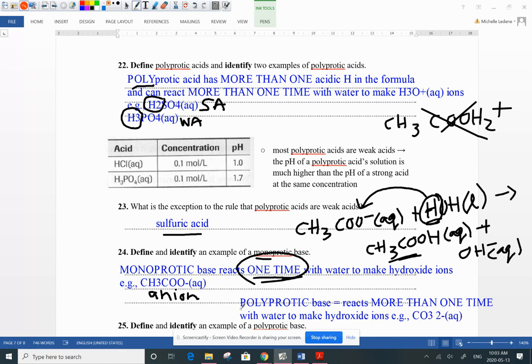So what's a polyprotic base? Well, again, poly, more than one. More than one what? More than one reaction with water to make hydroxide ions. So a lot of these monoprotics are going to be like HSO3 minus. It's an anion with a negative charge on it. We saw CH3 COO minus.